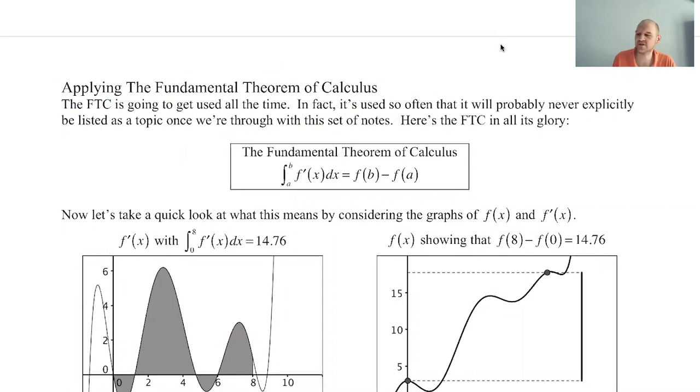In Calc BC, you'll run into something called improper integrals. But we are dealing with strictly proper integrals, where the function you're integrating, f', is continuous between A and B. So the integral from A to B of f'(x)dx is f(B) minus f(A). Crazy, amazing relationship.